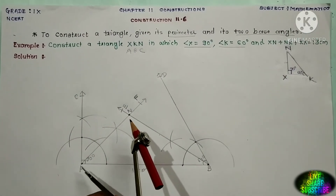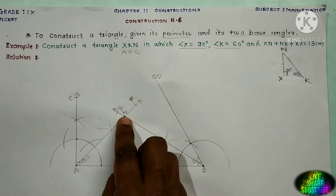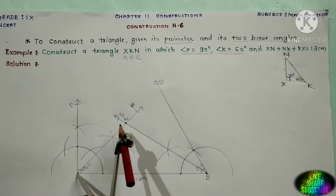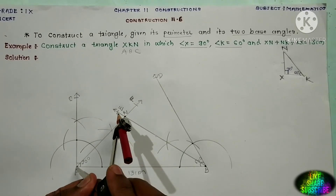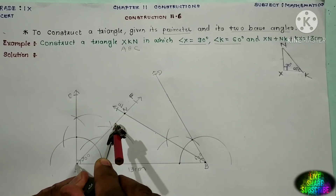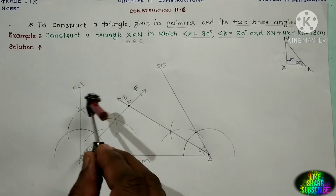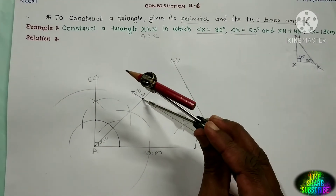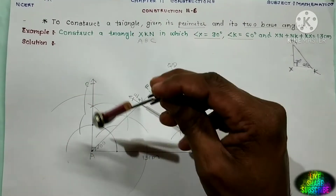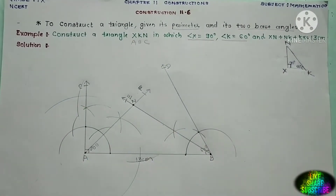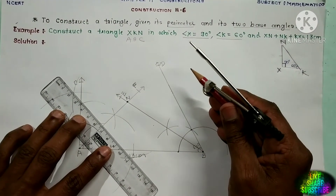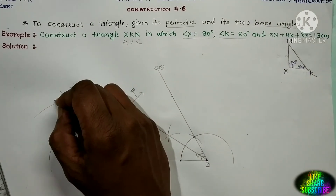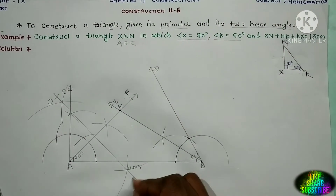Next step is to draw the perpendicular bisector of AN. Take the distance of AN — more than half of AN. Draw four arcs: first arc and second arc from point A, then third arc and fourth arc from point N with the same distance. Join these points. Let us name this perpendicular bisector as OZ.